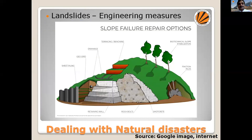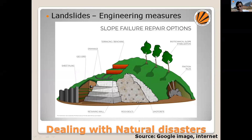Coming to landslides, it is very common in some developing countries. This particular slide explains all the engineering measures that can be taken to protect land from landsliding — like providing sheet piling, geogrids, drainage facilities, terracing or benching, biotechnical slope stabilization, friction piles, retaining walls, deadboards, or shotcreting. A lot of engineering is done to protect natural resources, because when there is a landslide, it not only depletes the natural resource but also damages the downstream area.